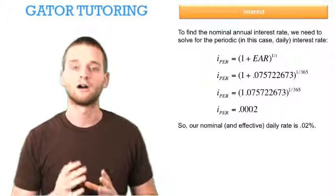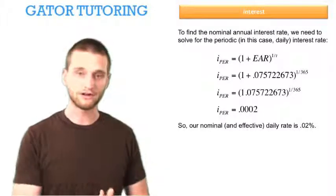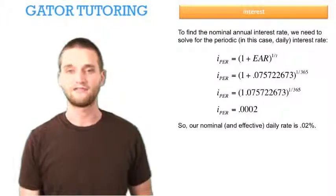This question tells us our interest is compounded every day. So we know when we find the rate that corresponds to a daily rate, it's going to both be the nominal daily rate and the effective daily rate.